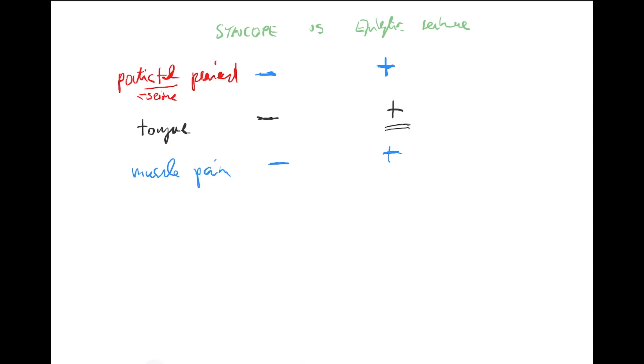And the end, sphincters. Released, released sphincters. All of them. And not over here, but over here, yes. Typically. And tonic-clonic seizure. Okay?